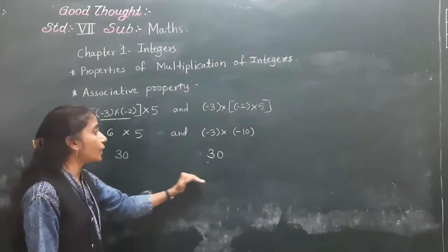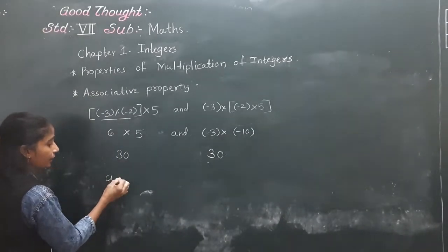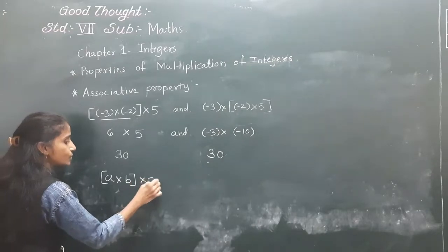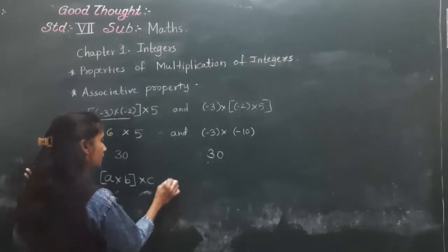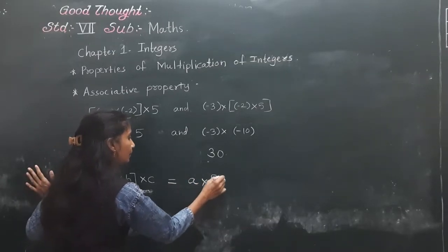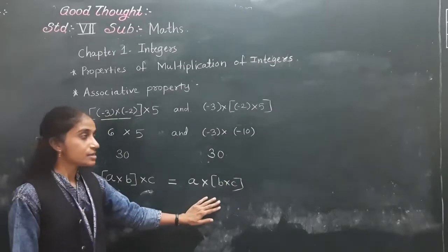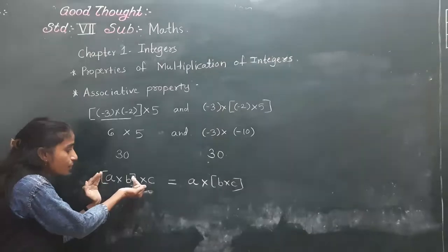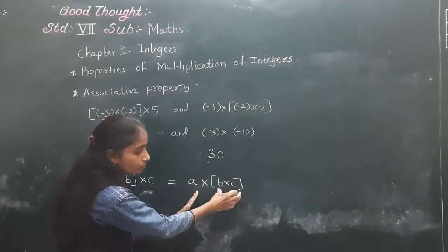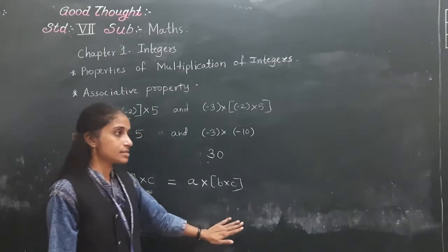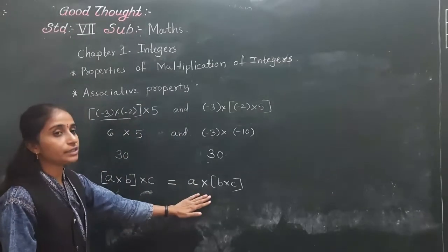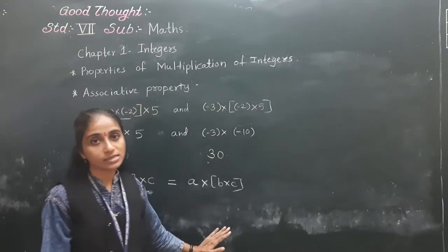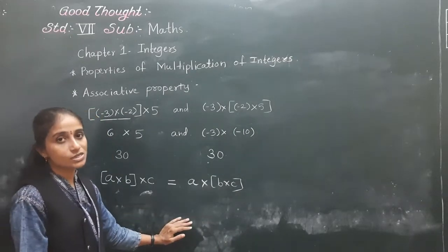This is the associative property. The formula is: A into B, into C, is equal to A into B into C. We only changed the brackets — first we solved the first two numbers, then the last two numbers — but the answer remains same. If we multiply 3 integers in any grouping order, the product remains same. This property is called the associative property.